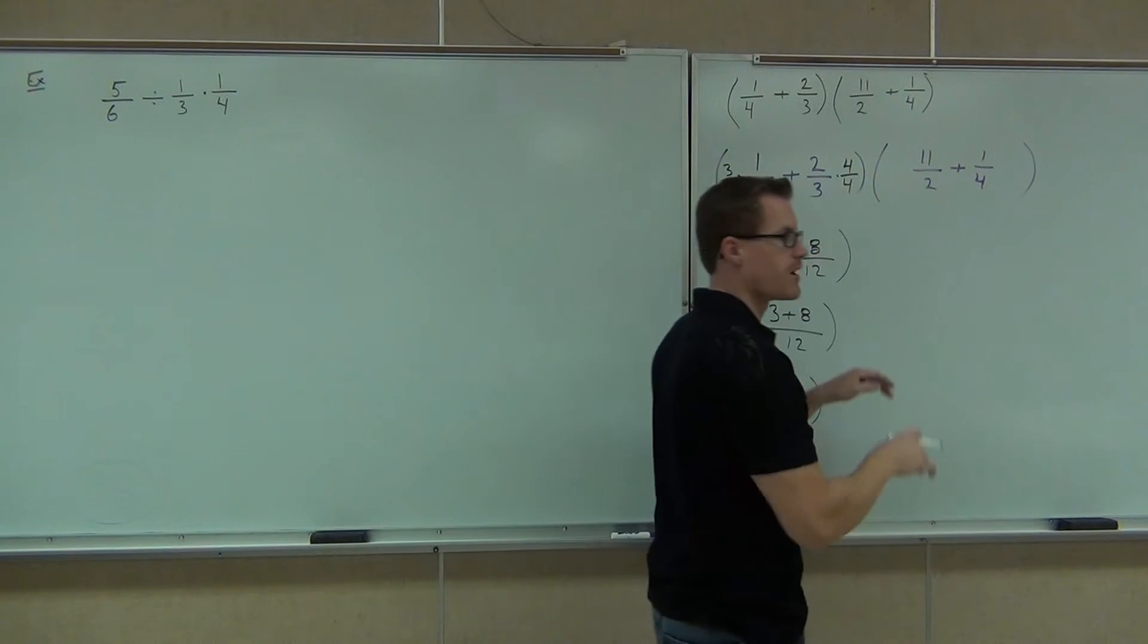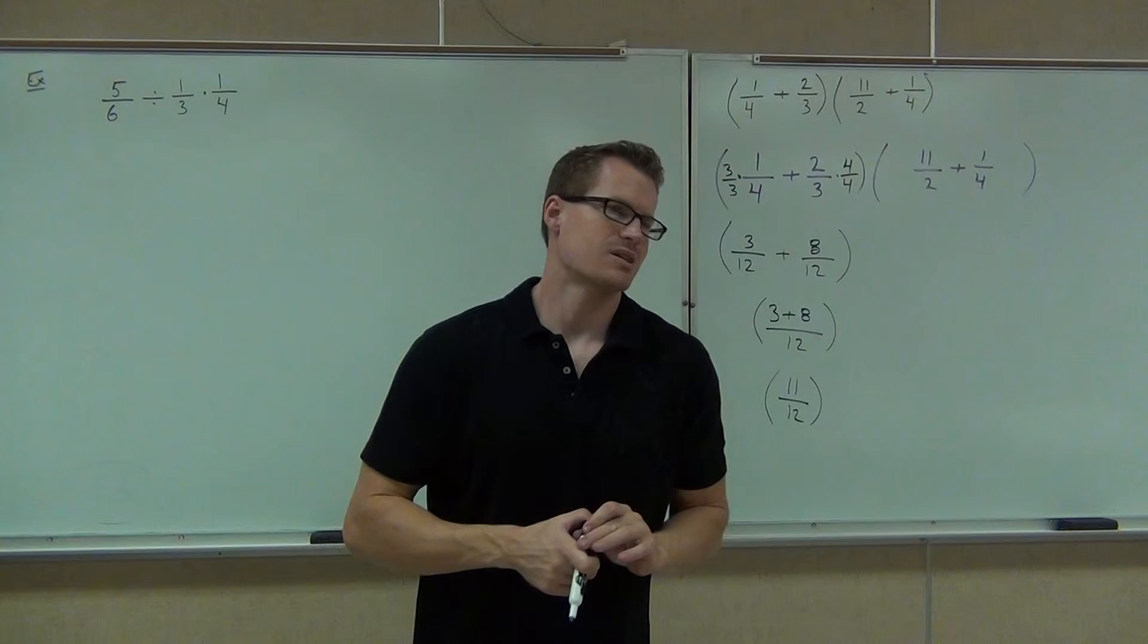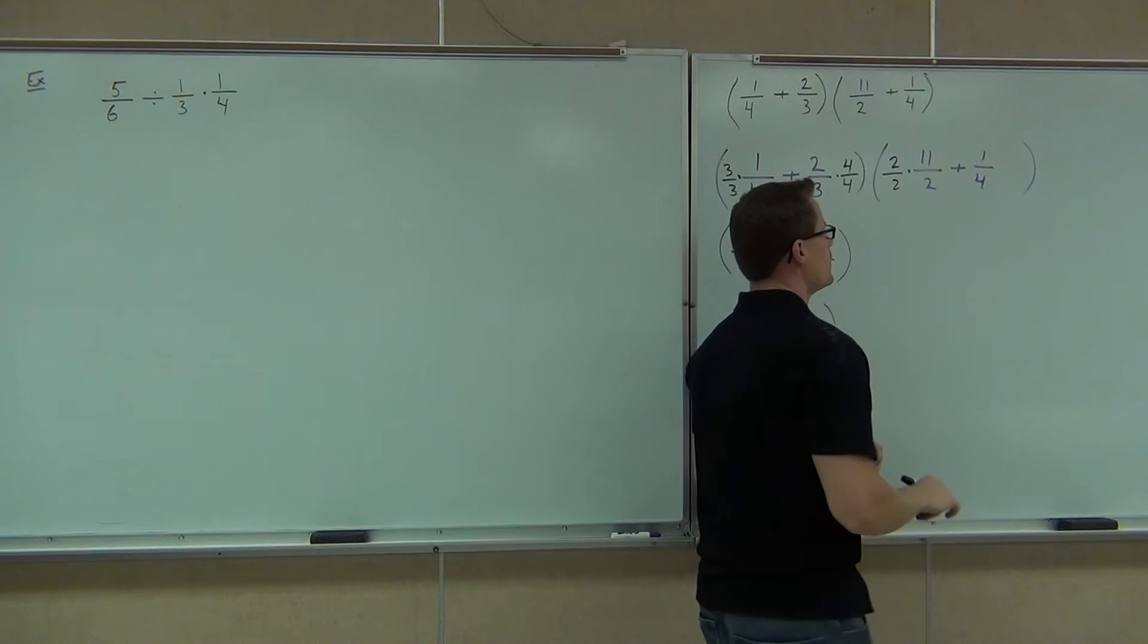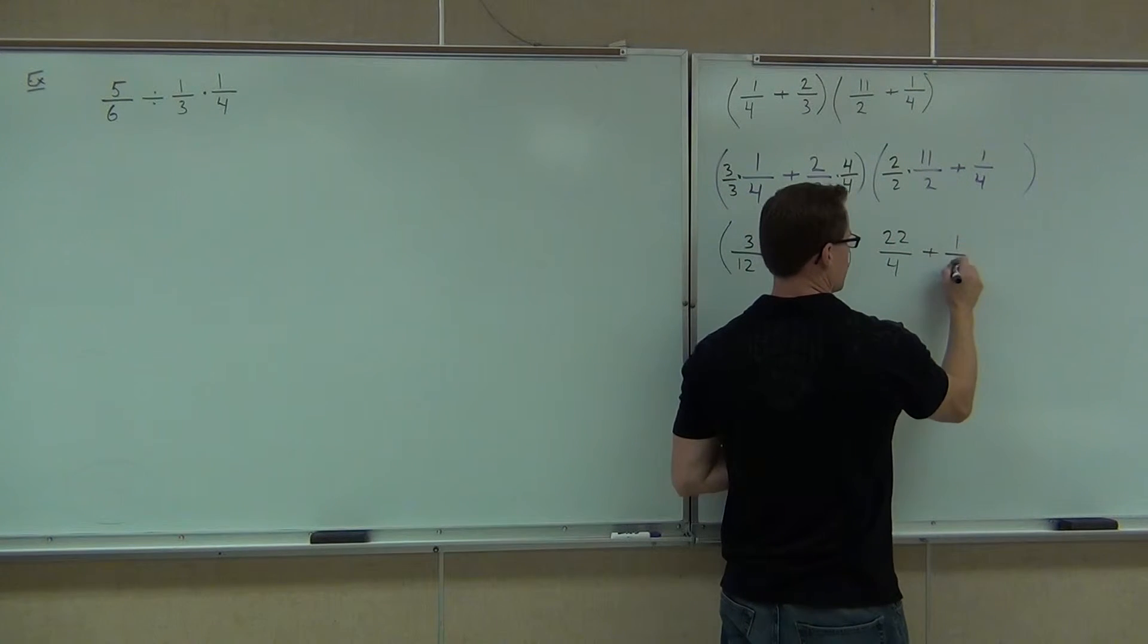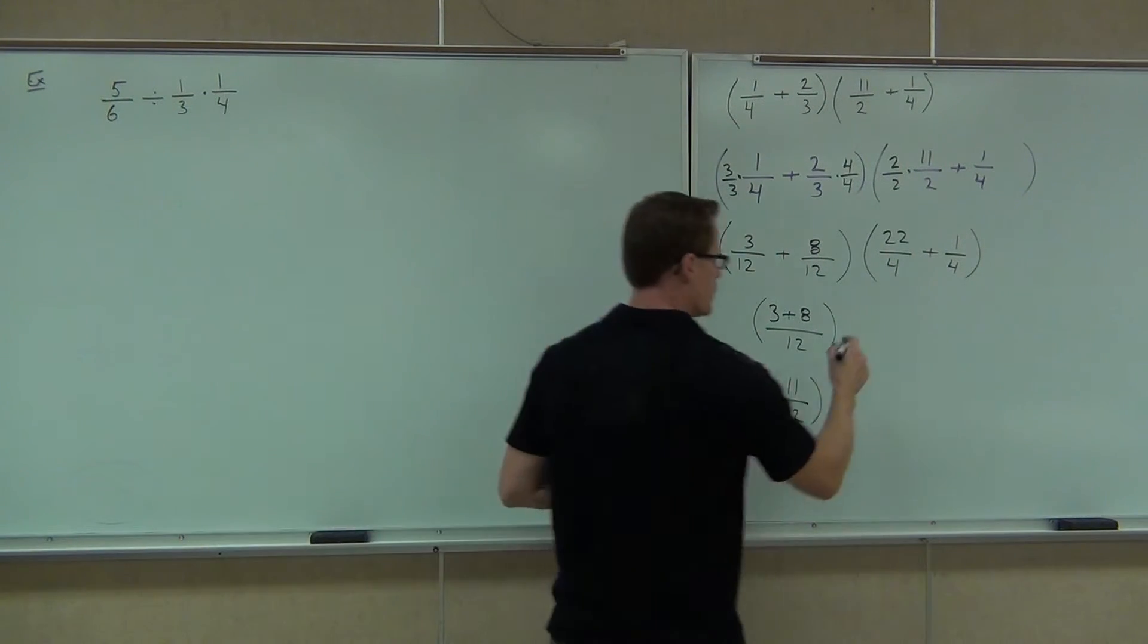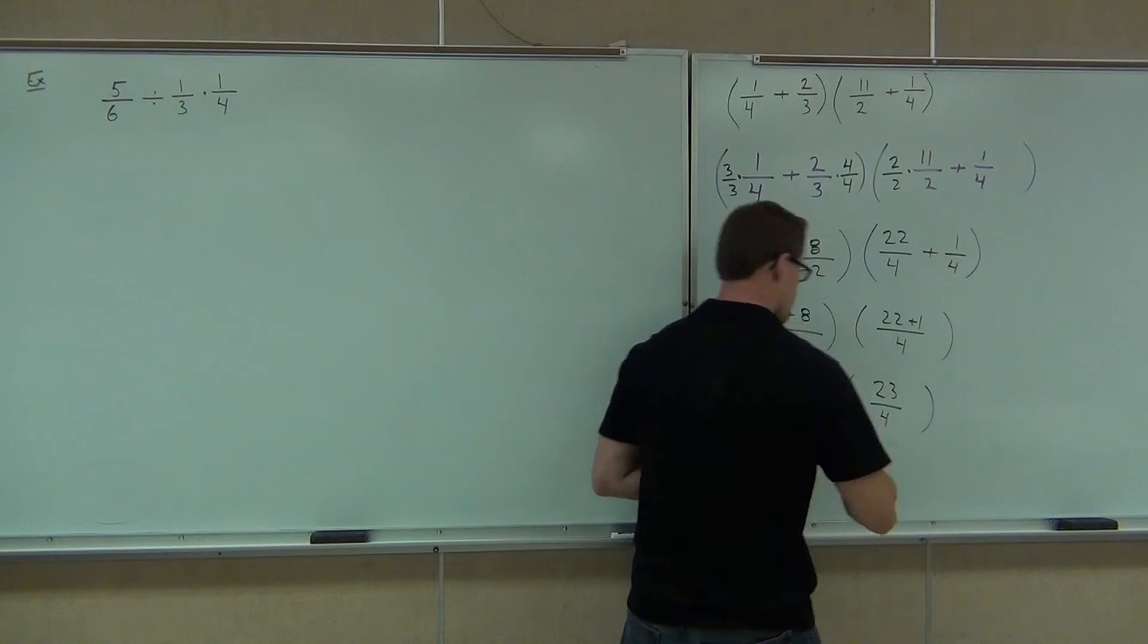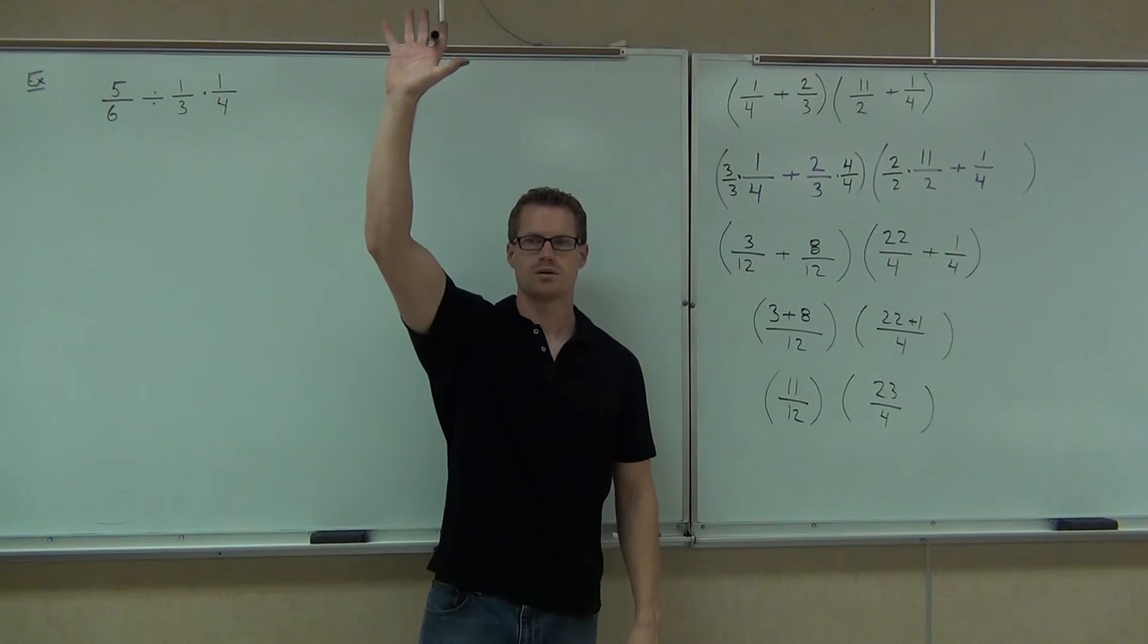If I combine them, now that we have an LCD, I get 3 plus 8 over 12. Or that's going to give me 11/12. Raise your hand if you've got 11/12 for those first fractions. Great. Okay. Now we've got to deal with our next set of fractions. When we're trying to add 1/2 plus 1/4, what is our LCD there? 4. Yeah, we don't want to pick something like 8 or 12. That's too big. It makes more work for us. Our LCD is already the 4. I just have to multiply this by 2 over 2.